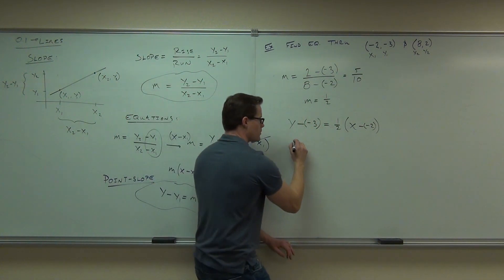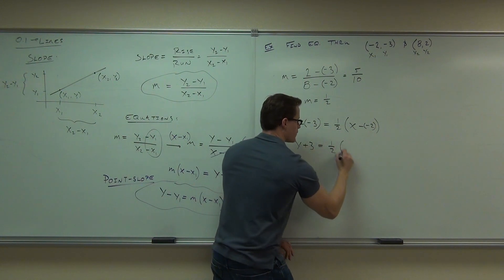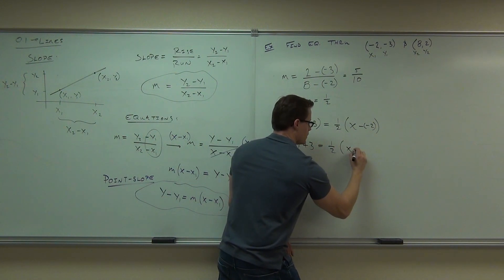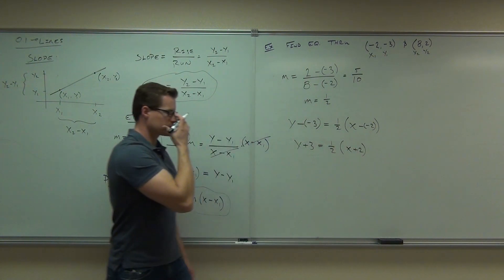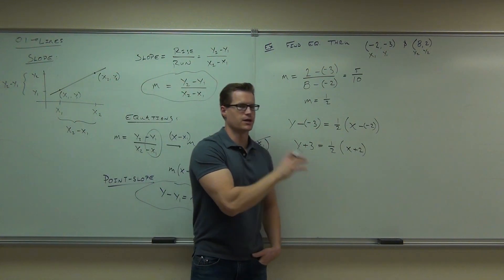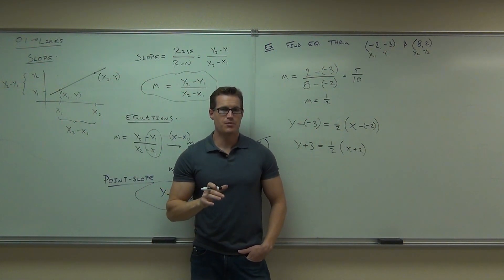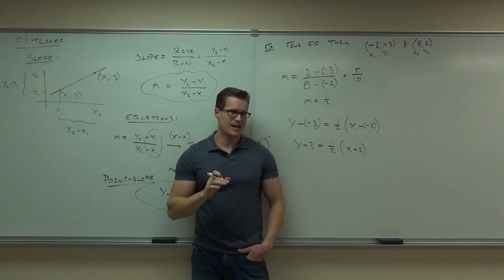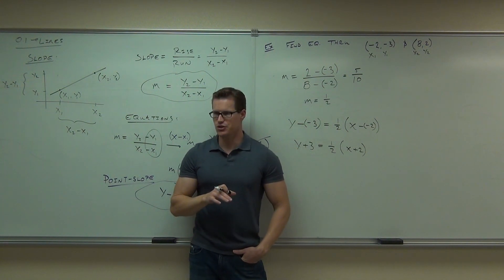We're going to have Y plus three equals one half X plus two. If it's asking for point-slope, you're done — that's it. But this isn't exactly the easiest way to graph a line, is it? Is there a way we could make it easier?